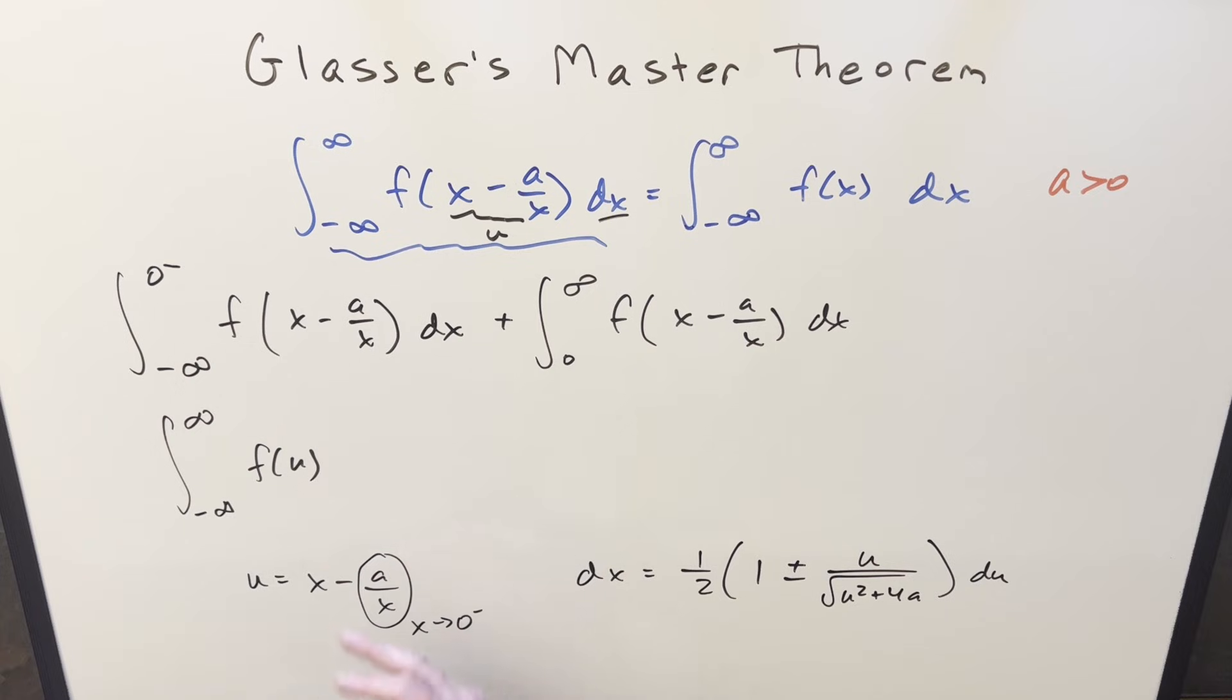Then this piece here just becomes f of u. For dx, we use this, but we're going to use, remember our x values are all negative, so we want the minus sign on this. So for the one half, I'll bring that in front, and we'll take this, but just the minus version of it.